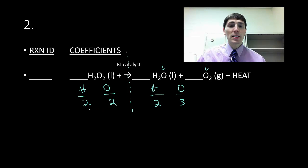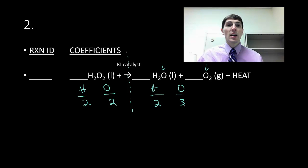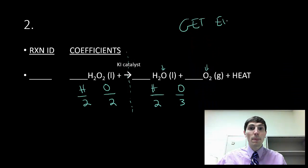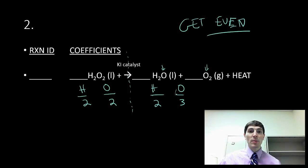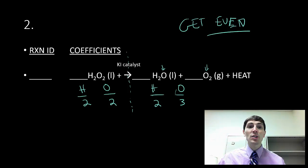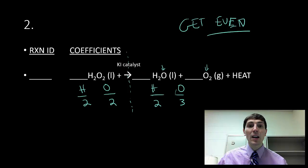Looking at this, I have 2, 2, 2, 3. I see there's an odd number of oxygen on the right-hand side. It's very likely that if you get an odd number, you're going to need to get even as you're balancing. So what I'm going to do is try to get my oxygen count to an even number. I'm going to double the H2O because I want to get that odd number of oxygens to an even number.